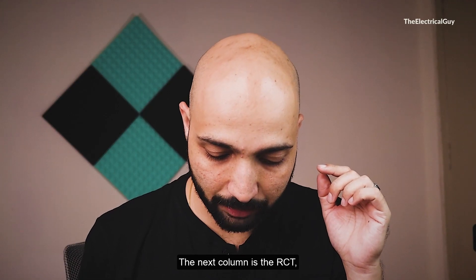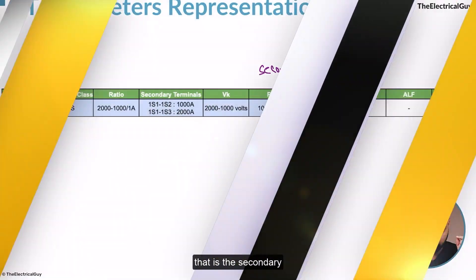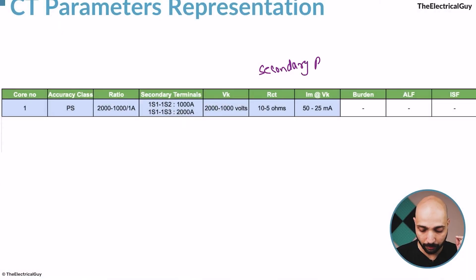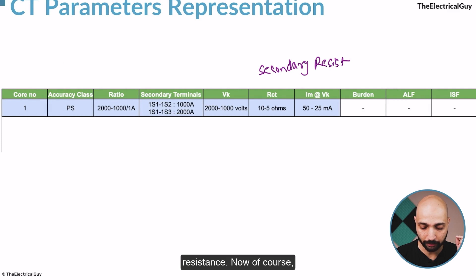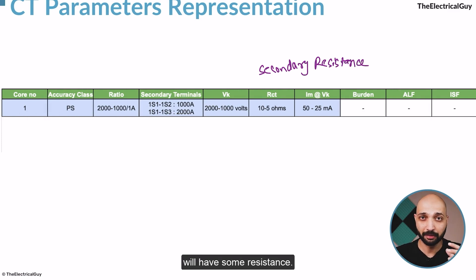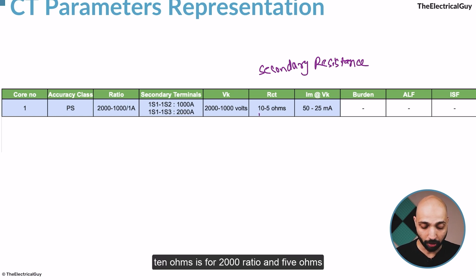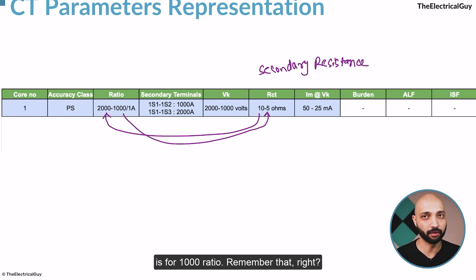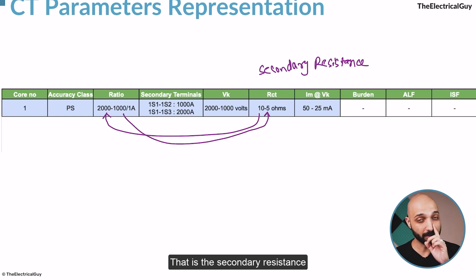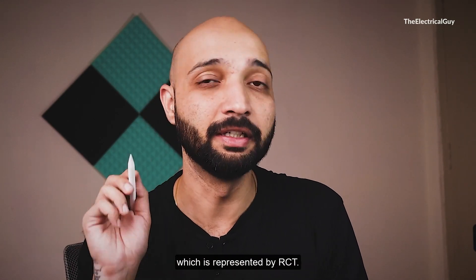The next column is RCT, that is the secondary resistance. The current transformer secondary winding will have some resistance, and this column indicates that resistance. Again, 10 ohms is for the 2000 ampere ratio and 5 ohms is for the 1000 ampere ratio.